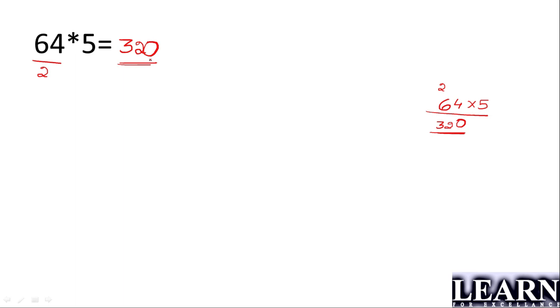Let me recall it once again. Whenever we have to multiply any number by 5, we'll first divide it by 2 or make it half and add one 0 at last.